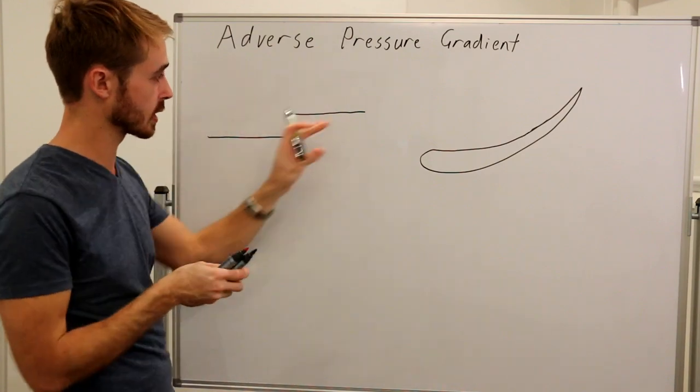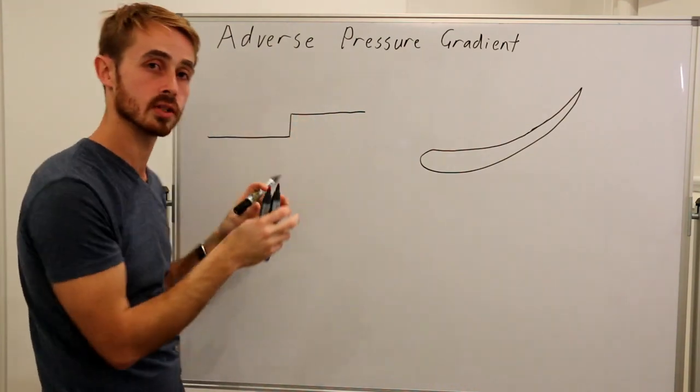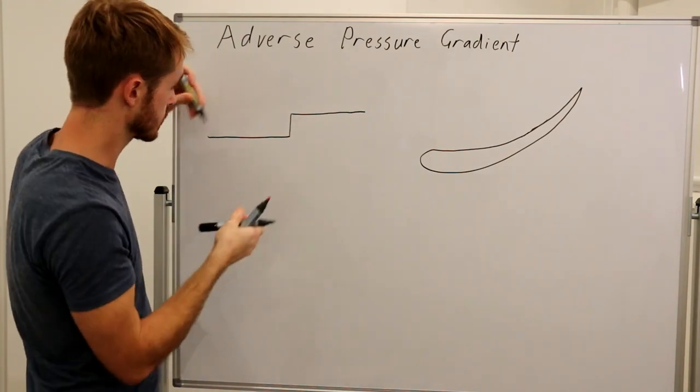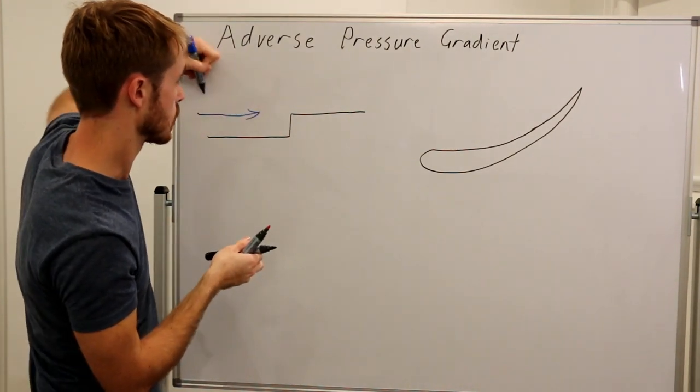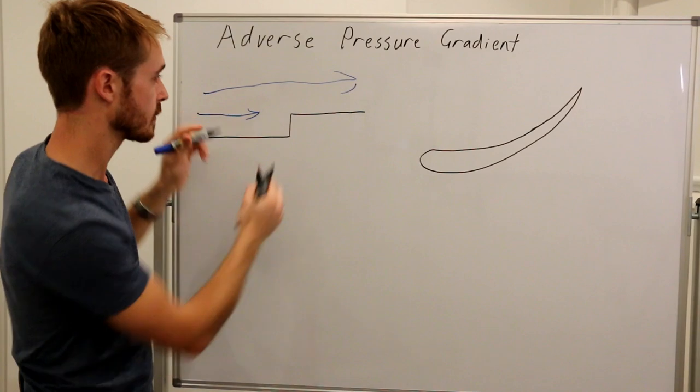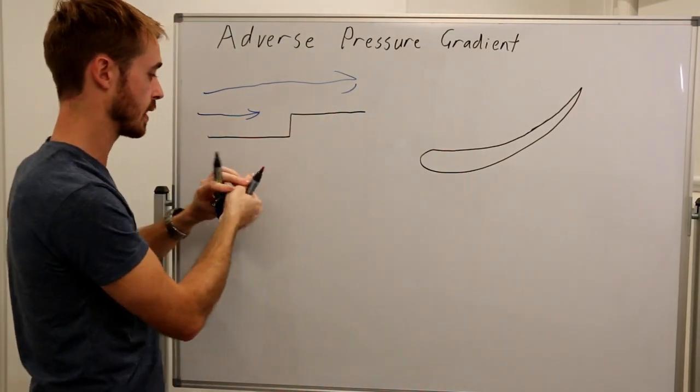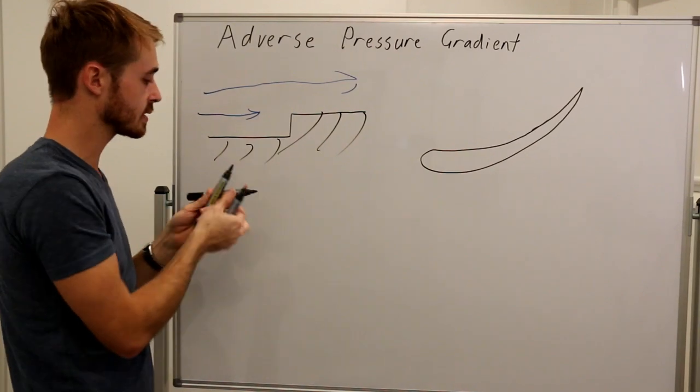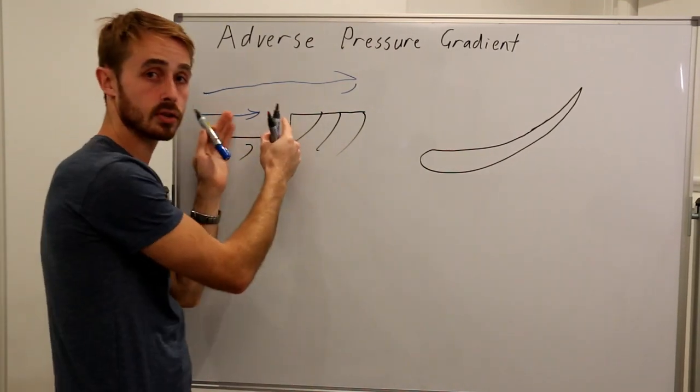If you can imagine that we have a flow coming along and we place an obstruction in its path, there's going to be pressure on here. So let's see, our flow is coming this way along here. Because we've got this step here, we can see that the flow will be slowing down here as a result of this obstruction.